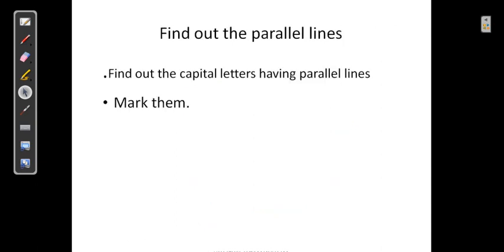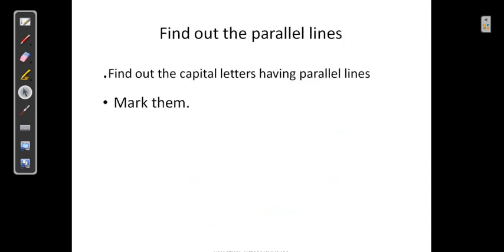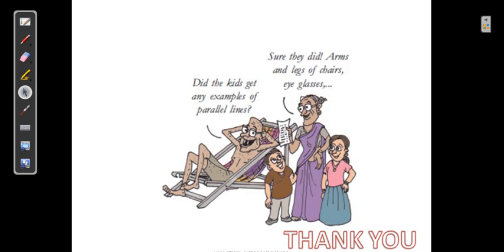One more activity: find out the capital letters that have parallel lines and mark them. Write down the capital letters neatly and pick out the letters having parallel lines, marking them. For example, the letter E — the parallel lines present are these three horizontal lines. Thank you, and the rest in the next class.